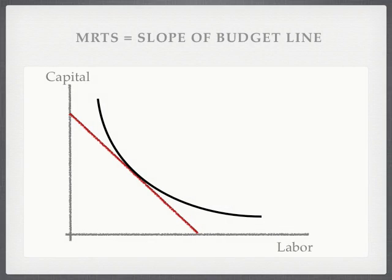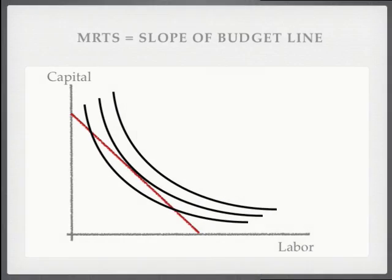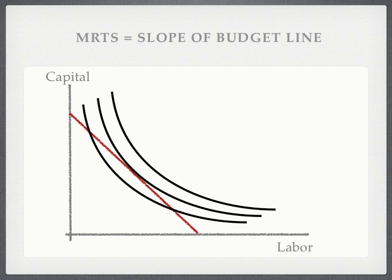Just like we did before, we match up our isoquants and our budget line. We produce at a level where the marginal rate of technical substitution equals the slope of the budget line. Looking at these three points, the firm would produce at the point where the green dot is, because it can reach a higher level of production by moving from yellow to green.